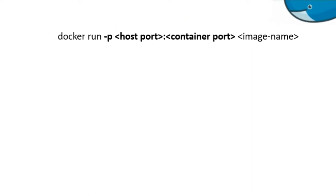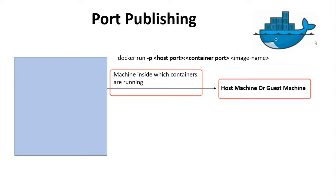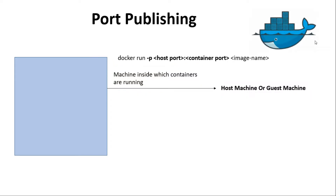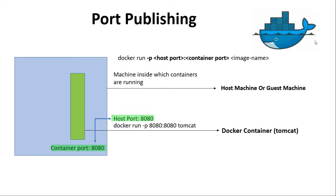The -p option takes input as host port and container port. Let's assume our Docker containers are running in a machine, which can be either a host machine or guest machine. We started the Tomcat container inside this machine, and because of the -p option, host port 8080 got mapped to container port 8080, which allowed traffic on host port 8080 to be routed to container port 8080.